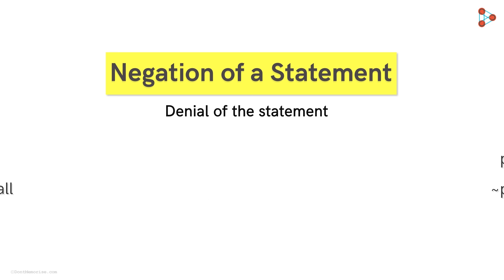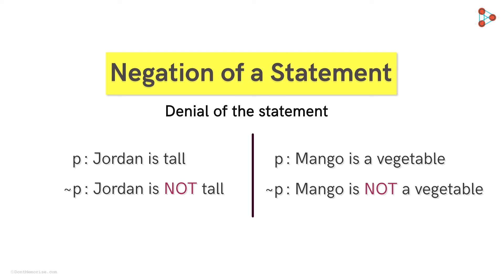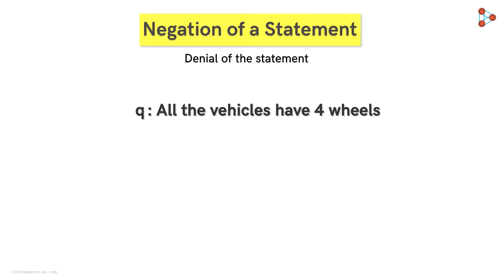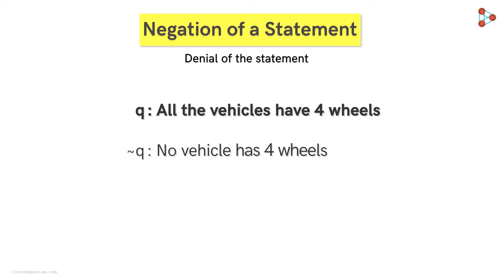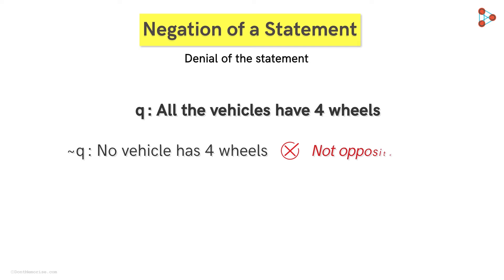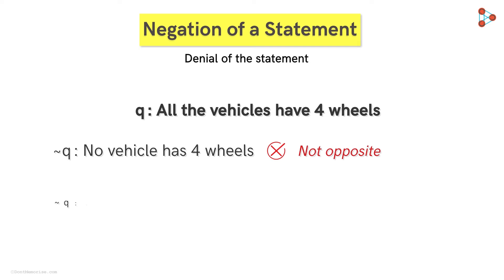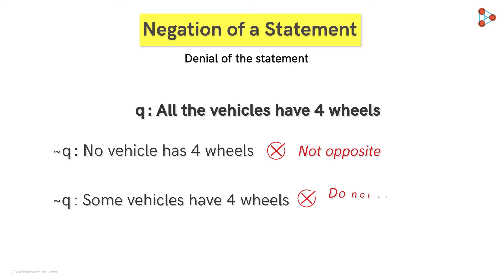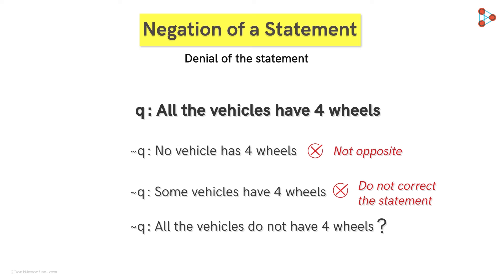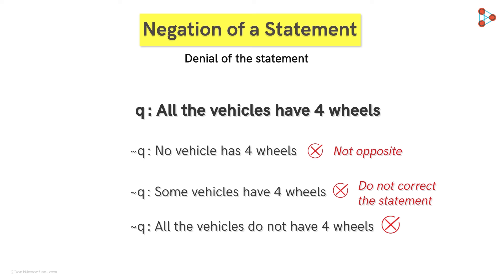Now that we have understood the relatively easier examples, let's take it one notch higher. Consider this example: All the vehicles have four wheels. What will be the negation of this statement? Will it be no vehicle has four wheels? No, that wouldn't be correct, because negating does not imply writing the opposite. So it could be some vehicles have four wheels? This wouldn't be correct either. Remember, we don't correct the statement, but just negate it. How about all the vehicles do not have four wheels? Even this cannot be the negation of this statement.